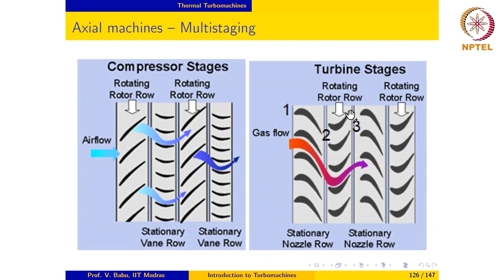So alpha 2 equals beta 3, and alpha 1, which is the flow angle at entry to the rotor, is also equal to alpha 3 because the angle at which the flow enters the stator is the same angle at which the flow leaves the stator in the following stage. Alpha 1 equals alpha 3, which in turn is equal to the blade angle at entry to the rotor, so alpha 1 equals beta 2.